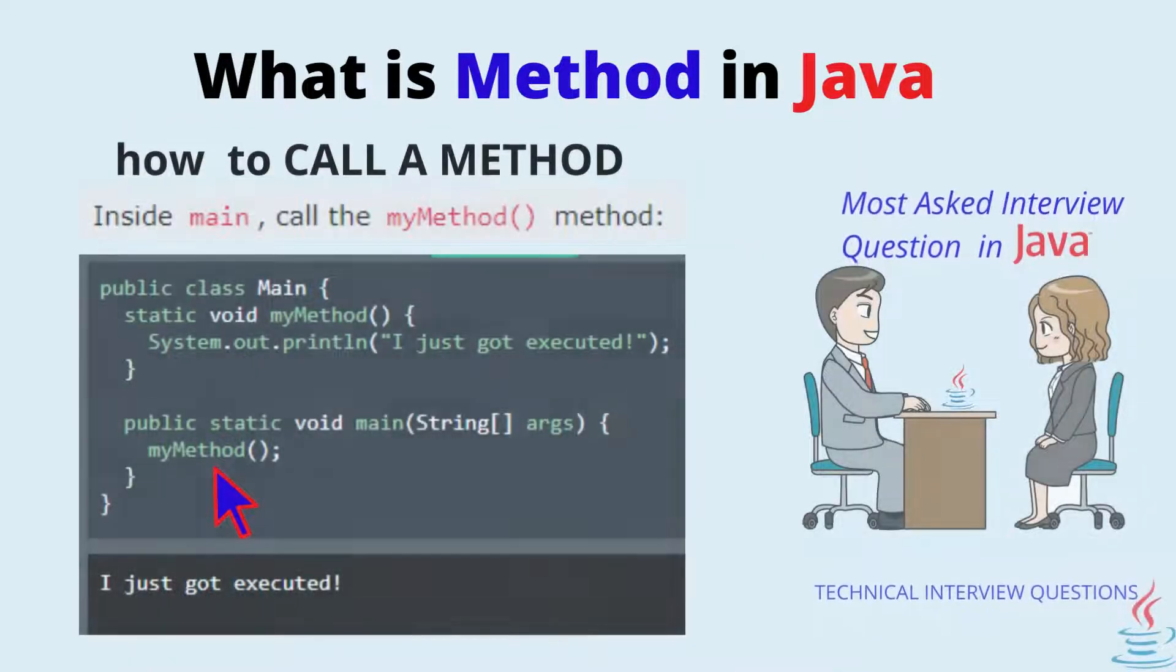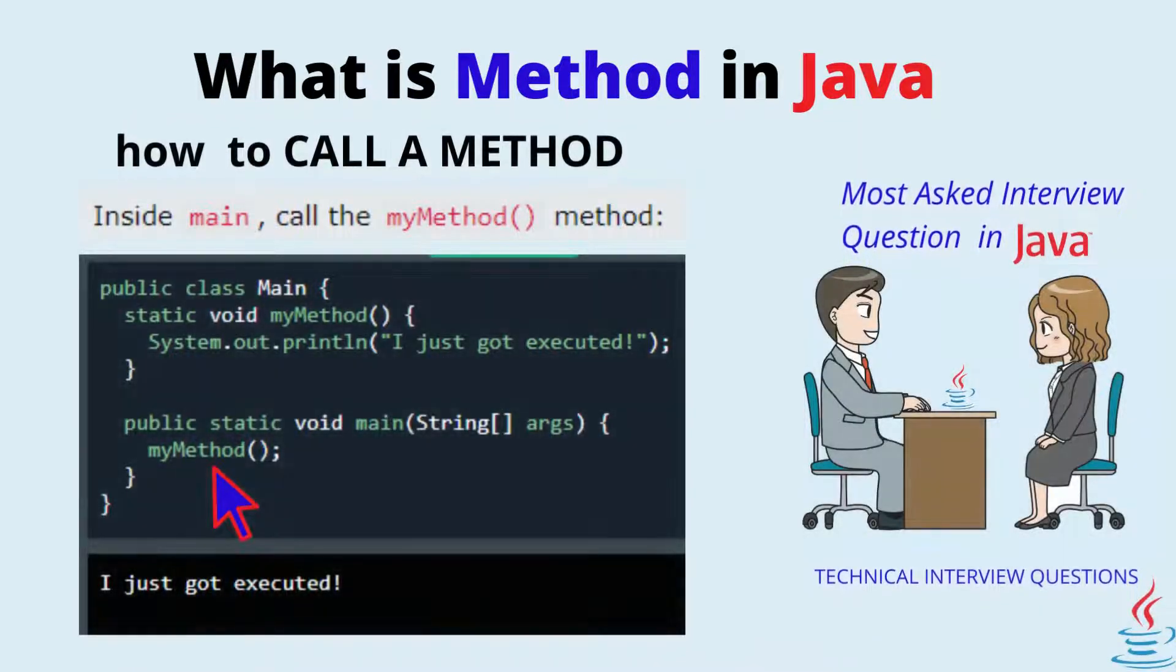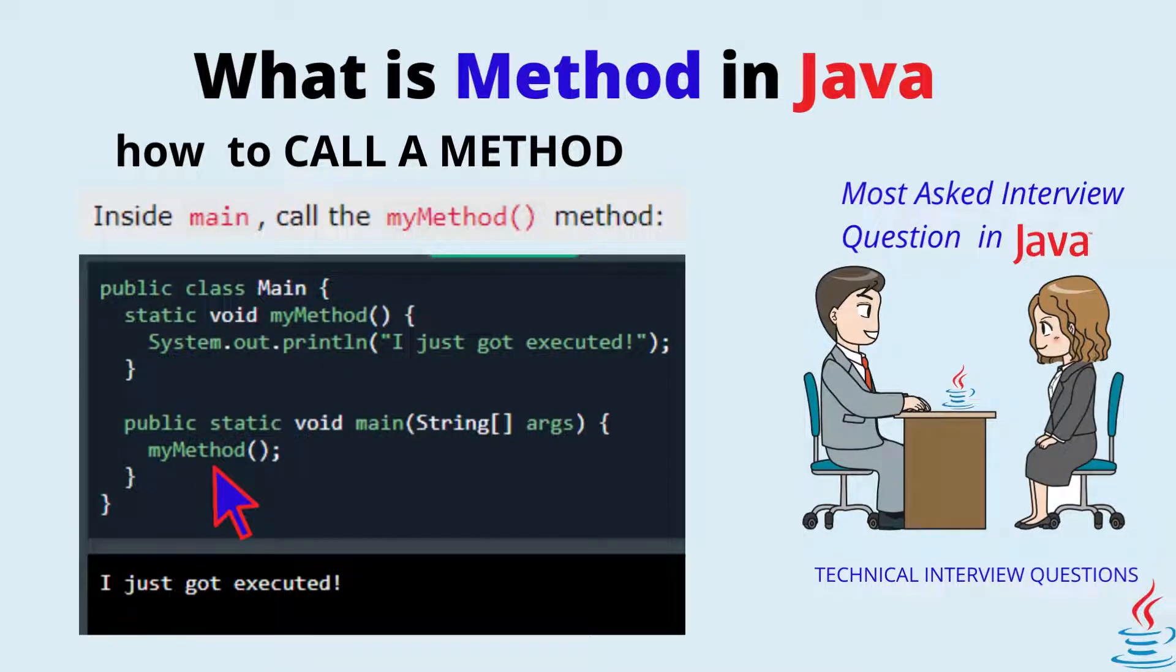Call a method. To call a method in Java, write the method's name followed by two parentheses and a semicolon. In the following example,